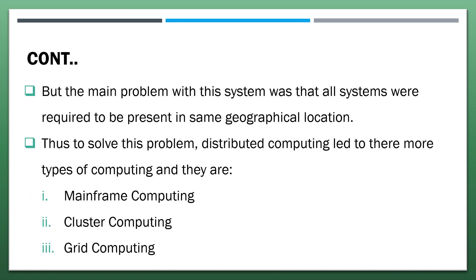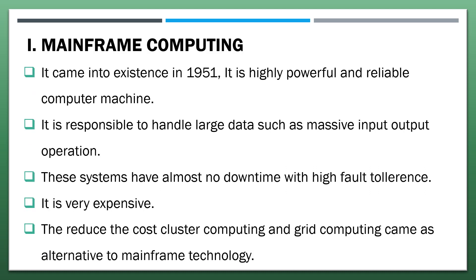The main problem with distributed systems was that all systems were required to be present in the same geographical location. To solve this problem, distributed computing led to more types of computing. To reduce costs, cluster computing and grid computing came as alternatives to mainframe technology. Mainframe computing came into existence in 1951. It is a highly powerful and reliable computer machine, responsible for handling large data such as massive input-output operations. These systems have almost no downtime with high fault tolerance, but are very expensive.